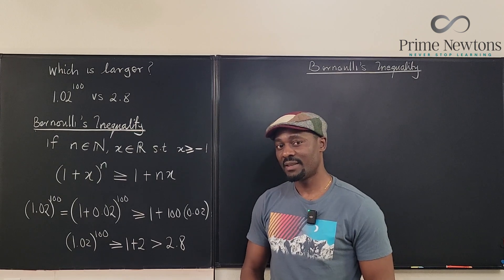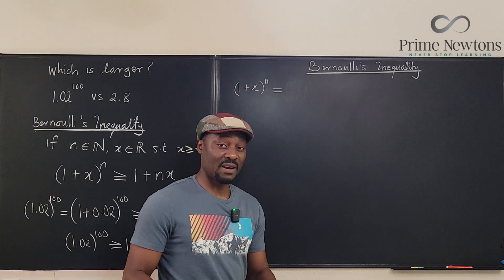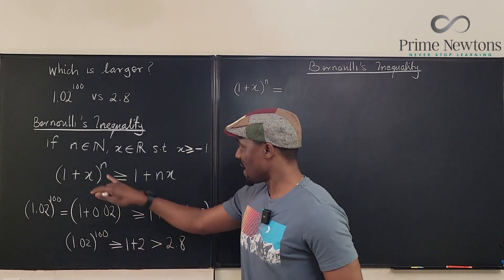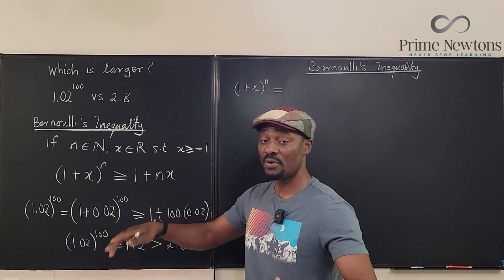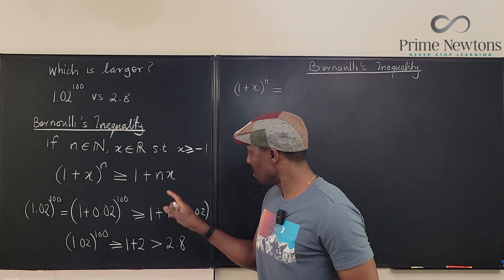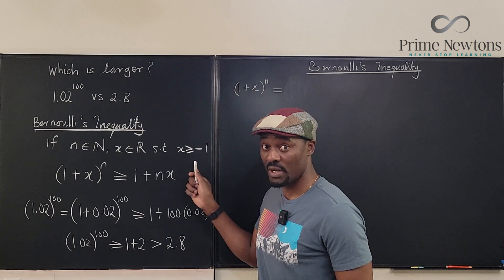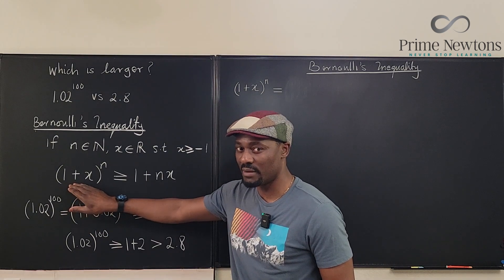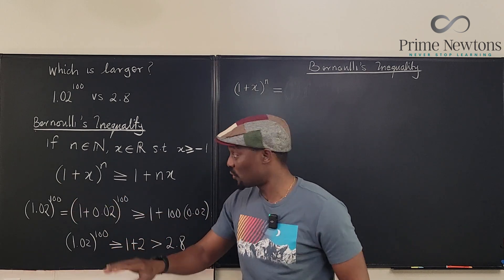Now let me make some quick clarifications. First, the exponent must be a natural number — so 1, 2, 3, 4 — no fractions, no decimals. Second, the value of x must be greater than or equal to negative 1. This condition ensures we don't have to guess whether expressions are negative or positive, keeping things manageable.